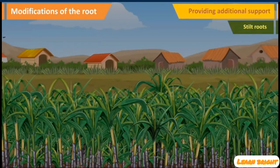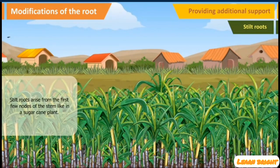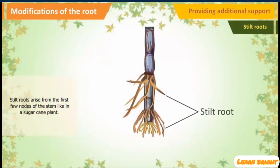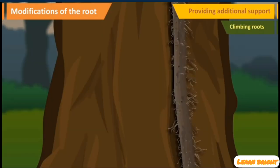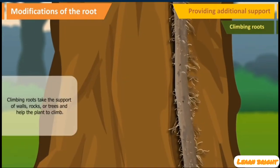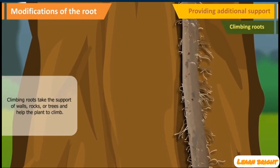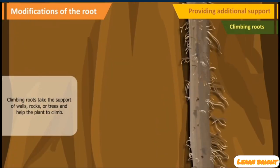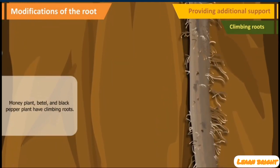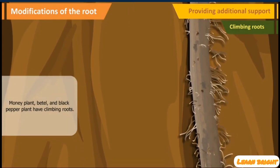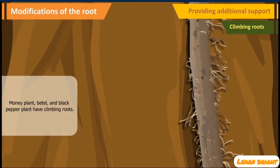Stilt Roots arise from the first few nodes of the stem, like in a sugarcane or maize plant. Climbing Roots take the support of walls, rocks or trees and help the plant to climb. Money Plant, Beetle and Black Pepper plants have climbing roots.